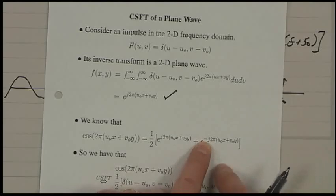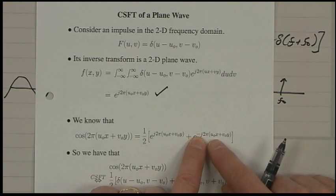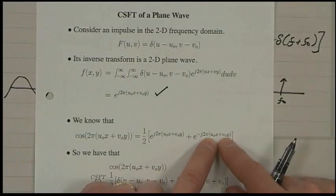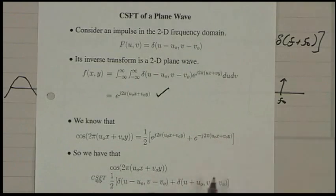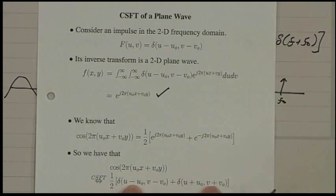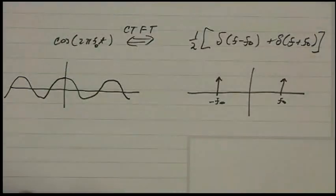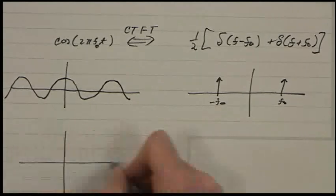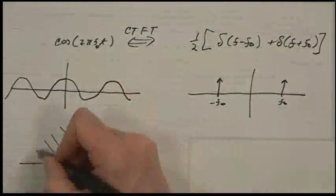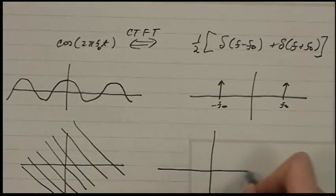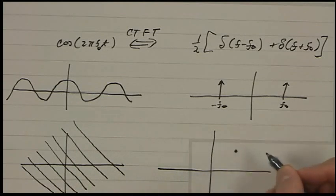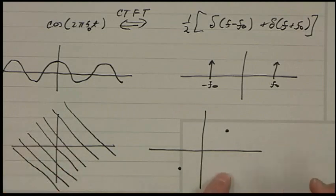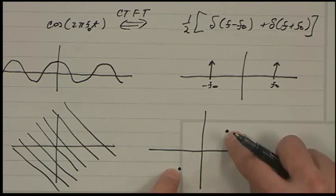Now we get two components — one corresponding to positive frequencies and one corresponding to the mirror image at negative frequencies. In 2D, you'll have a sine wave, and in frequency you'll get an impulse there and an impulse in the mirror location — it's always reflected through the origin, with equal angles. I grew up in South Jersey near the Atlantic Ocean, so I always think of these 2D sinusoids as looking like ocean waves. The direction of the waves is the same as the orientation of the impulse in frequency.